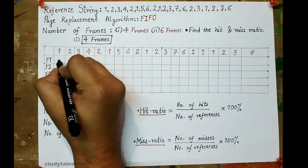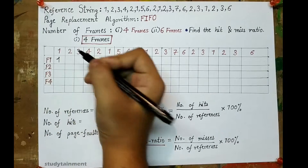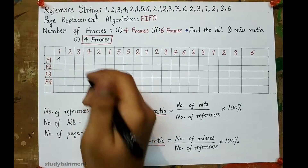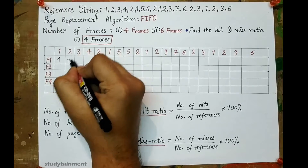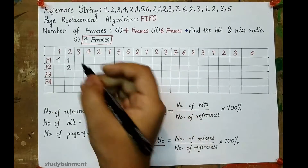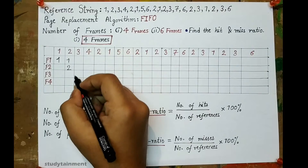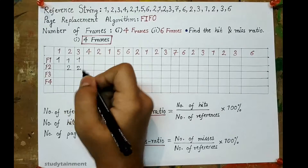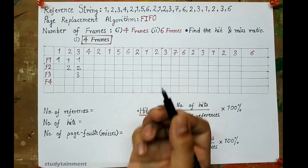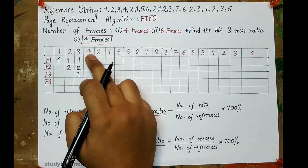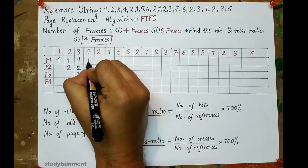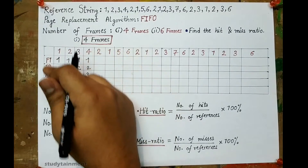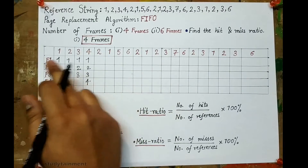Initially all the frames are empty. Page 1 is introduced — it is a page fault because 1 was not present earlier. Then 2 is loaded, also a page fault. 3 is also not present, so it is also a page fault. 1, 2, and 3 are now in frames. Now 4 — 4 is also not present, so it is a page fault. All frames are now occupied.